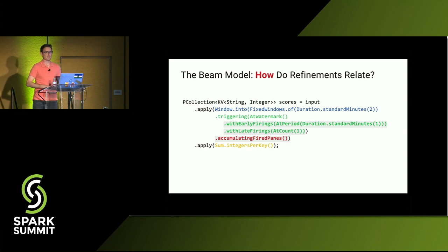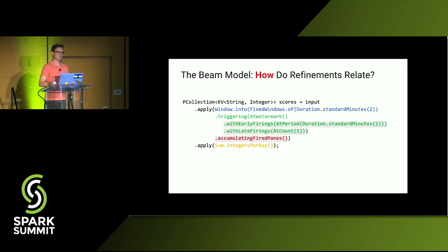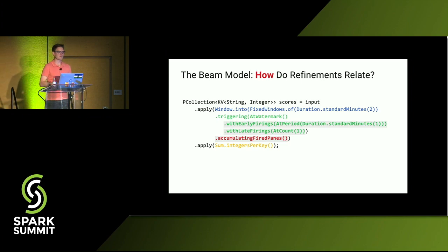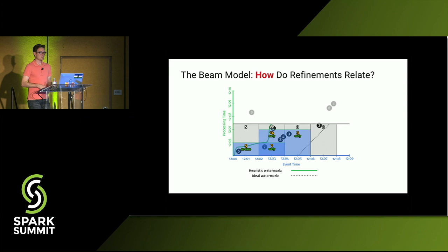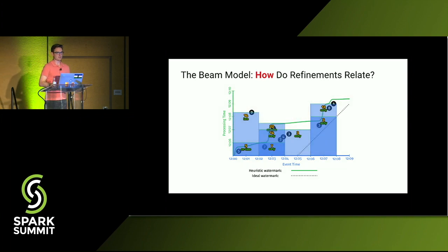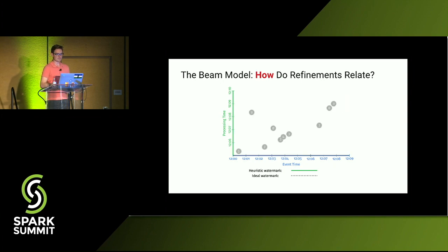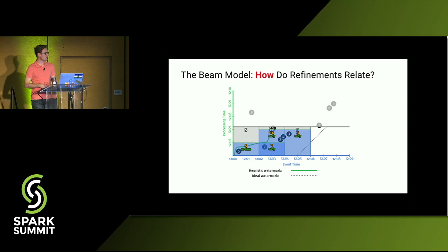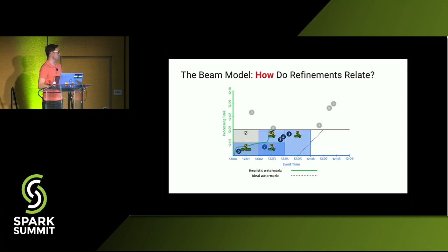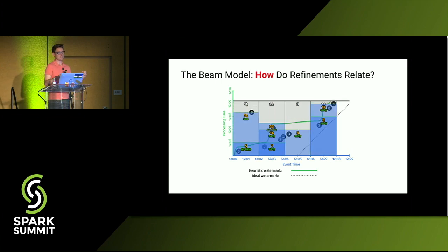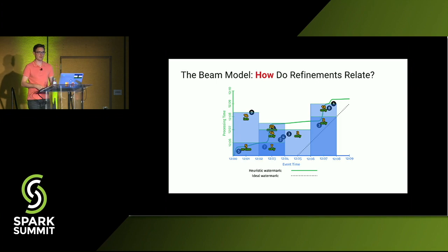So how do we refine the data when we process it? With Beam, you can easily add refinements for data arriving early, on time, or late. This is the actual Beam code — it's very expressive and simple. In this case, we emit results as soon as we think they're ready, but also handle updates once they arrive late. Score 9 was late, but we go ahead and emit a new result with the updated score. In just a few lines of Beam, you can do something fairly complicated.